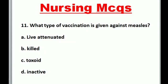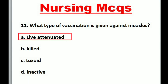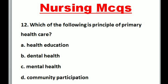Question 11: What type of vaccination is given against measles? A. Live attenuated, B. Killed, C. Toxoid, D. Inactive. Correct option is A: Live attenuated.